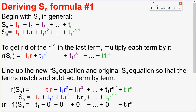I want to derive a formula for the sum, just as I did for arithmetic. A sum S_n in general is the first term plus the second term plus the third term, and so on to the end. For a geometric sequence, S_n can also be written as t₁ plus t₁·r plus t₁·r² and so on, up to the general term t₁·rⁿ⁻¹.